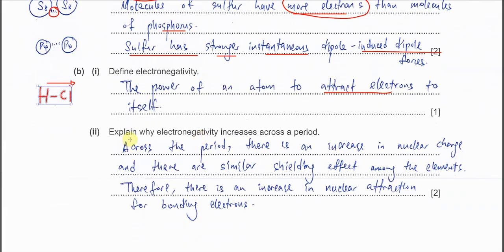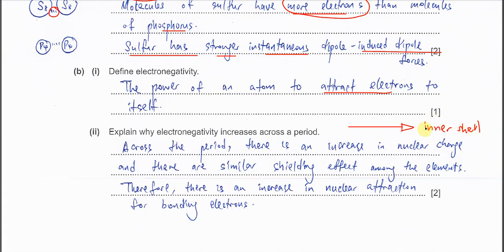Part two: explain why electronegativity increases across the period. Across the period, the number of inner shells for all elements is the same, so the shielding effect is almost constant. The other factor is proton number, which increases across the period. So across a period there is an increase in nuclear charge and a constant shielding effect due to the same number of inner shells.